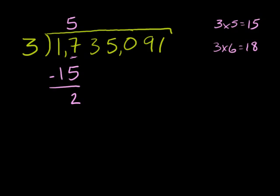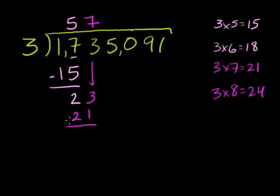And now we bring down this 3. Set 3 goes into 23 how many times? Well, 3 times 7 is equal to 21. And 3 times 8 is too big. That's equal to 24. So 3 goes into 23 7 times. 7 times 3 is 21. And we subtract. 23 minus 21 is 2.